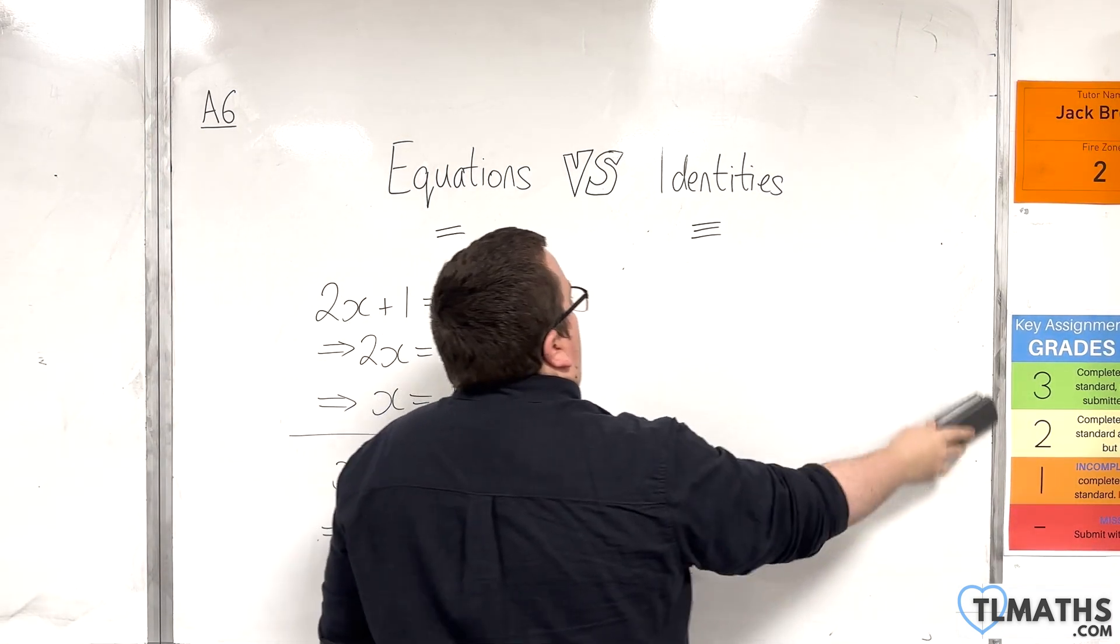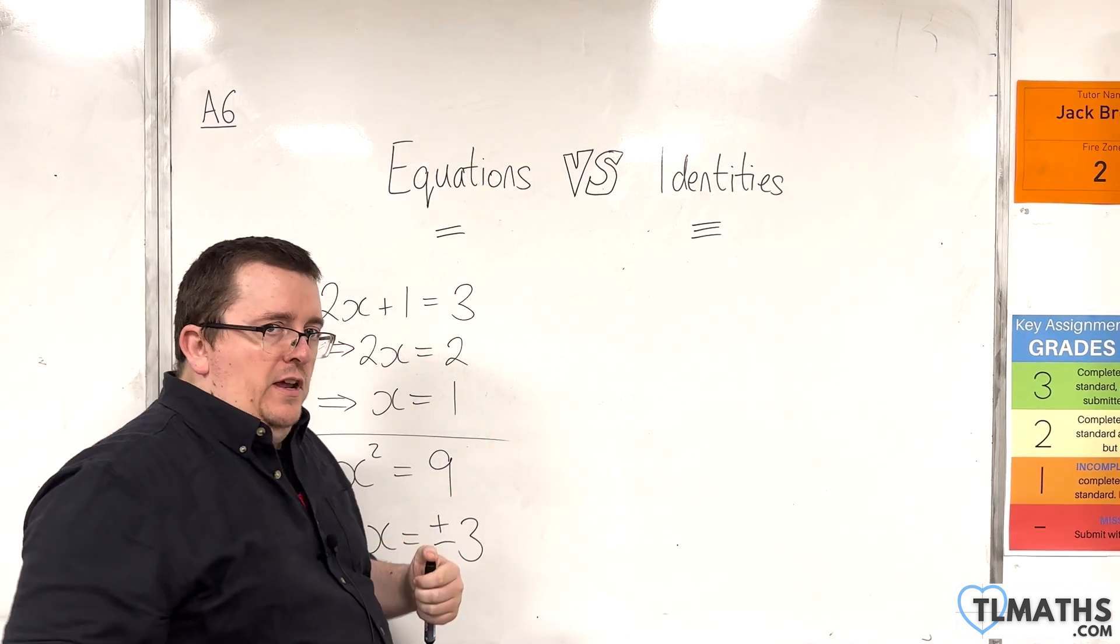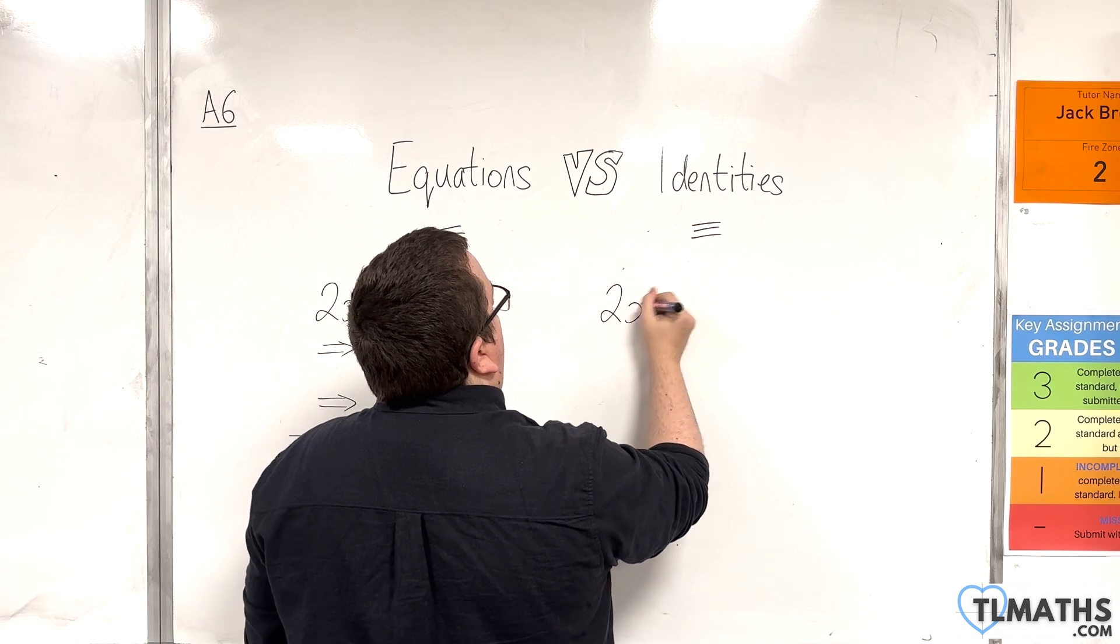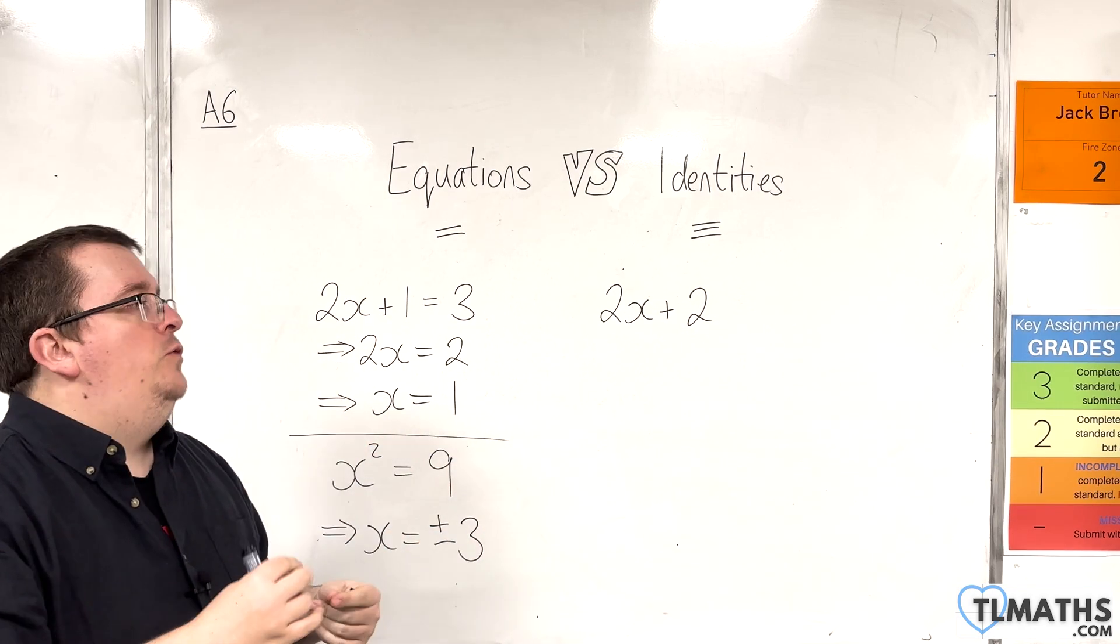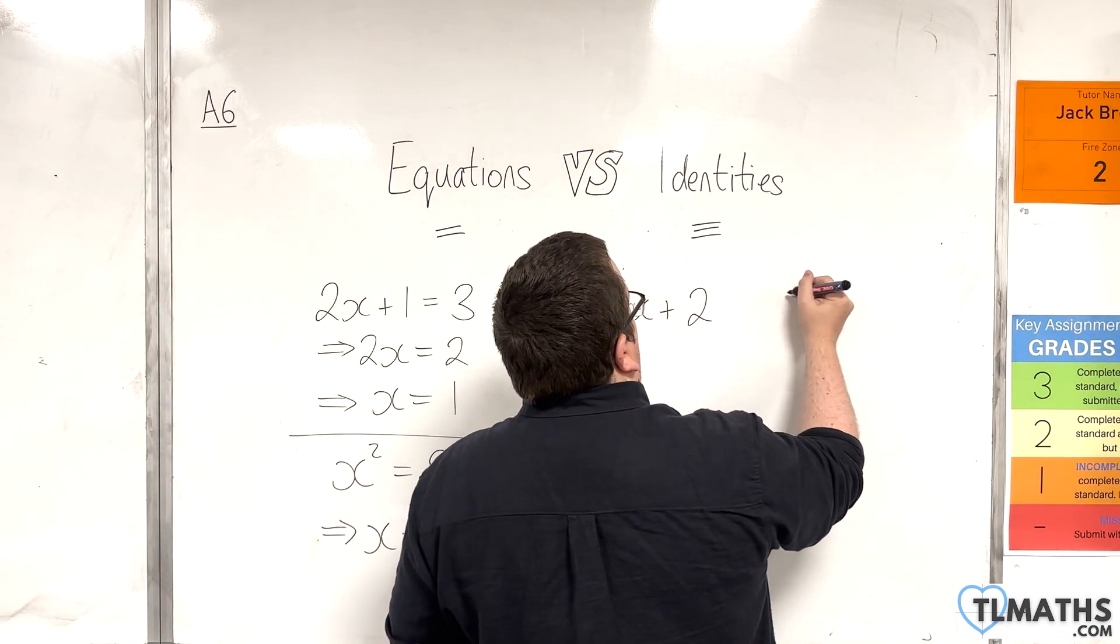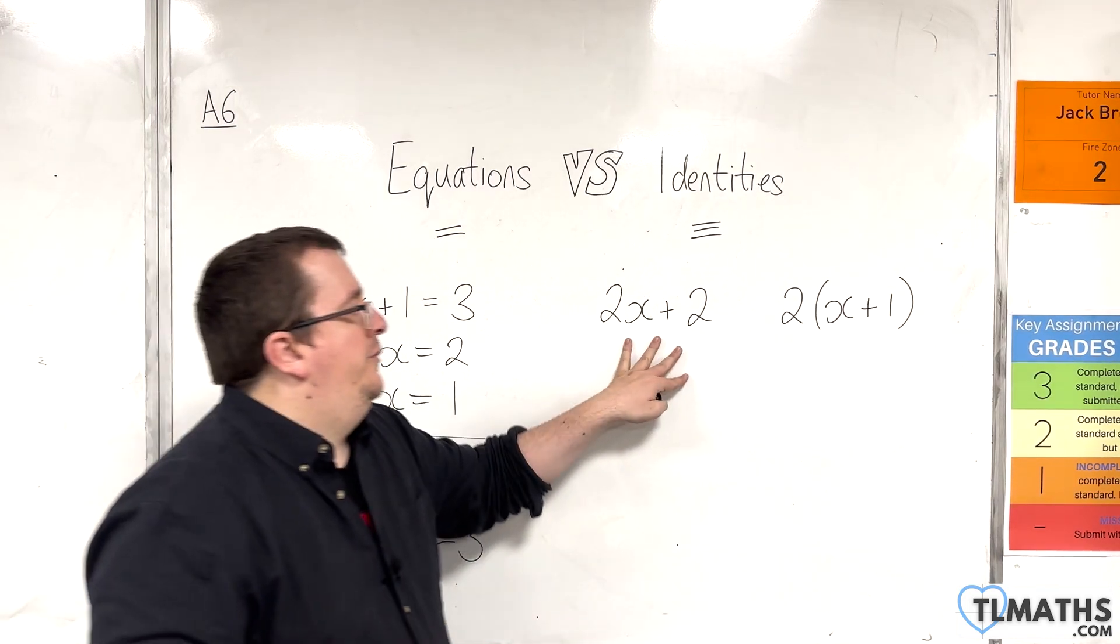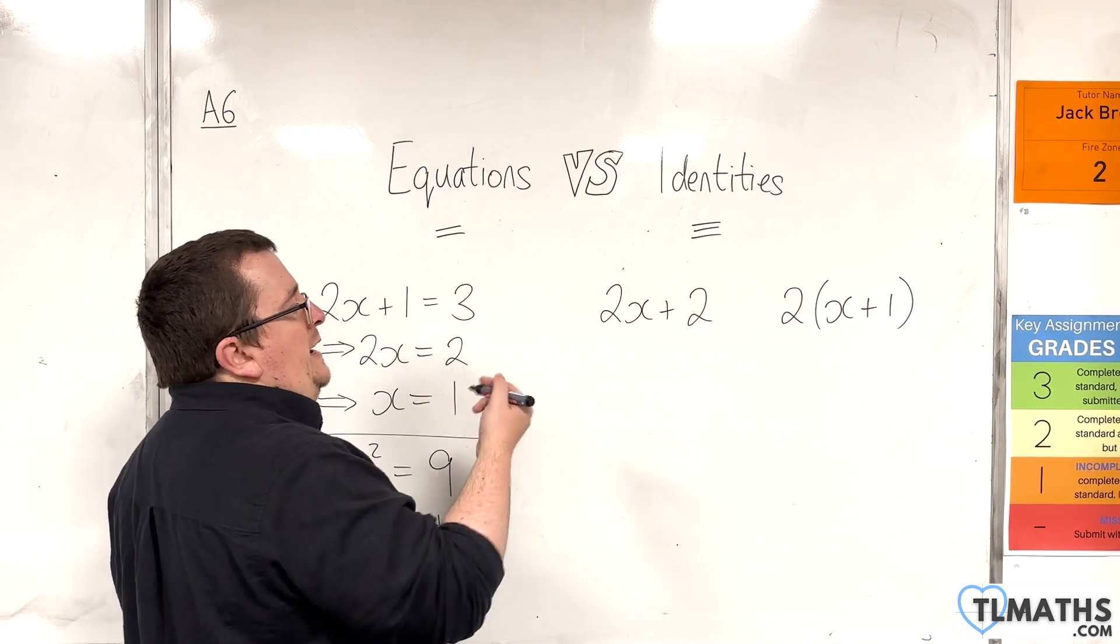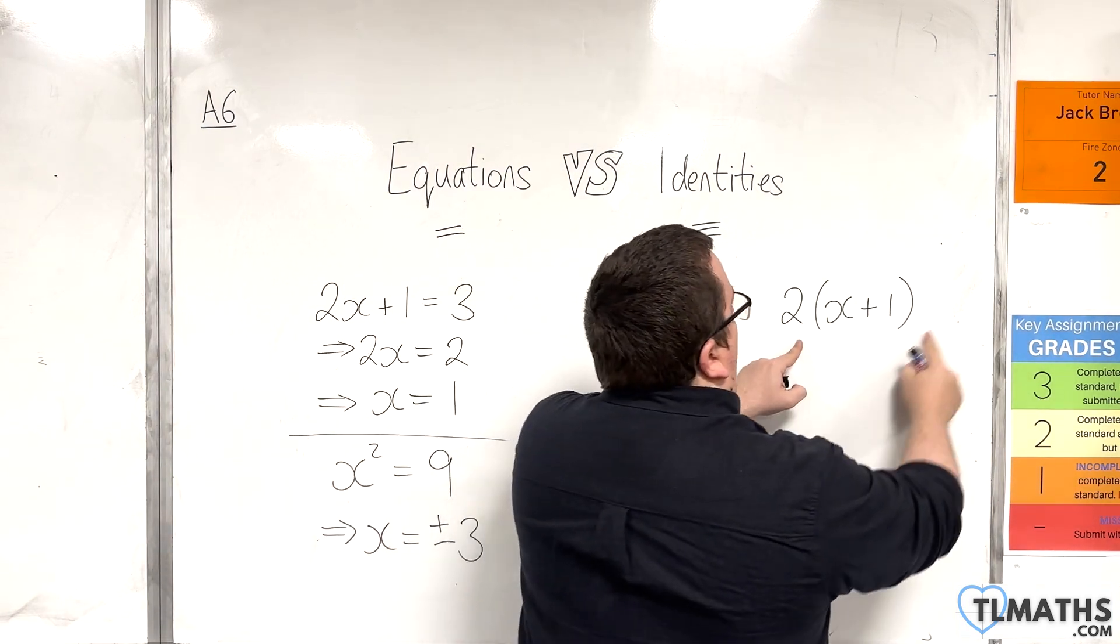What it is used for is for you to be able to say that one expression is the same as another expression. So an example would be this. Let's say we had 2x + 2. This is an expression because there's no equal sign with it. There's no equivalency symbol with it. So that's an expression. Another expression would be 2 lots of (x + 1). These are 2 separate expressions. But the thing is that no matter what value of x I substitute in here, I would get exactly the same value if I substituted it into here.